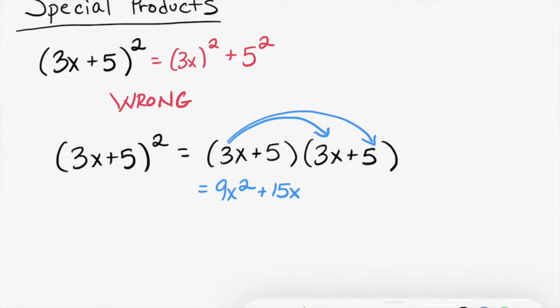And then? Very good. Distribute the 5. Now, what I want you to notice in this particular special product is what's going on in the middle here. You will notice that those are the same. It's 15x both times. That happens every single time you have a polynomial squared. The stuff in the middle is going to be the same.